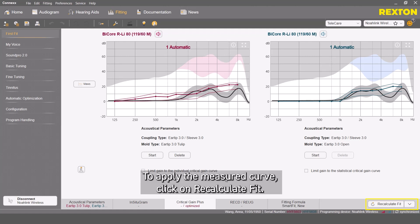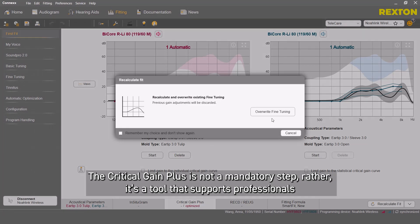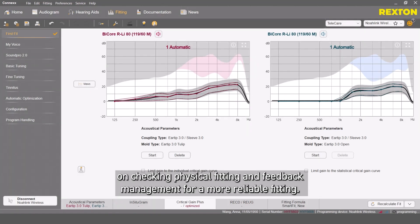To apply the measured curve, click on Recalculate Fit. The Critical Gain Plus is not a mandatory step. Rather, it's a tool that supports professionals on checking physical fitting and feedback management for more reliable fitting.